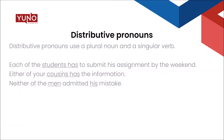Distributive pronouns usually use a plural noun and a singular verb. For example: 'Each of the students has to submit his assignment by the weekend.' We are referring to a group of students, but each individual student must submit — so 'students' is a plural noun and 'has' is a singular verb. Similarly, 'Either of your cousins has the information' — here we are talking about two cousins, and one of them has the information, so 'cousins' is plural and 'has' is singular.